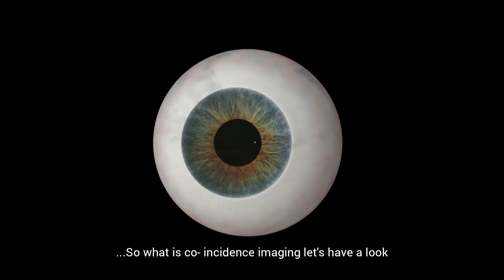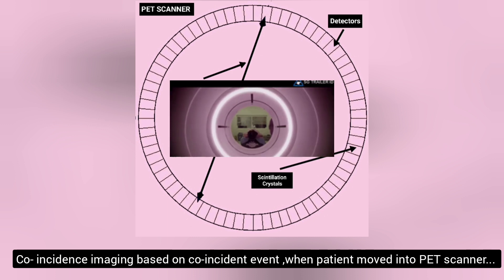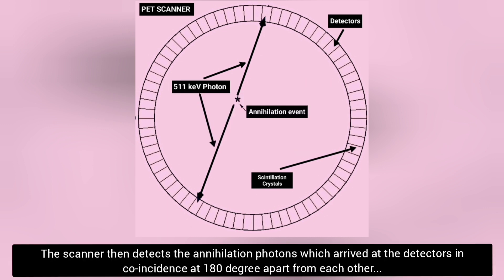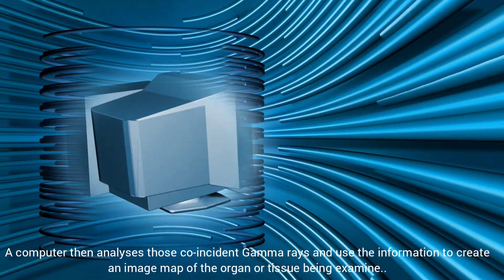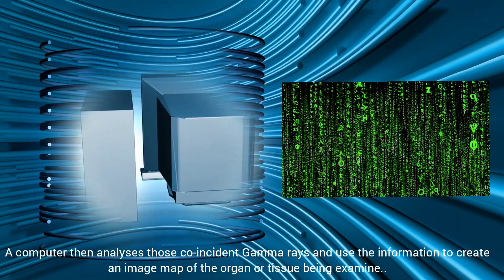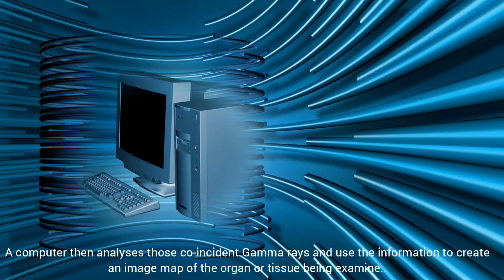So what is coincidence imaging? Coincidence imaging is based on a coincident event. When the patient moves into the PET scanner, the scanner detects the annihilation photons which arrive at the detectors simultaneously, 180 degrees apart from each other. A computer then analyzes those coincident gamma rays and uses the information to create an image map of the organ or tissue being examined.